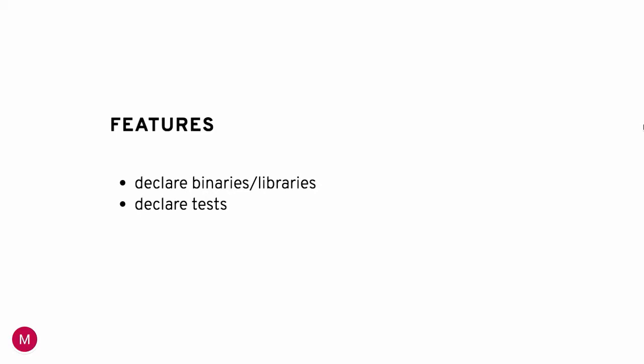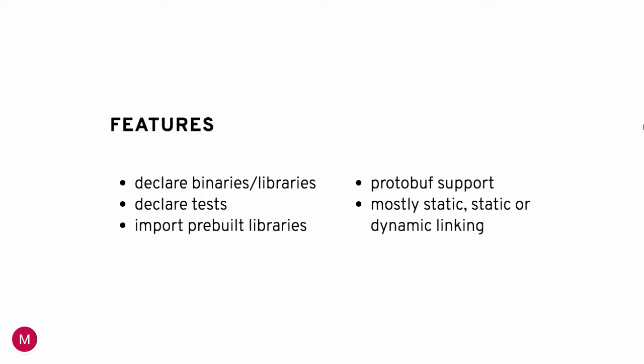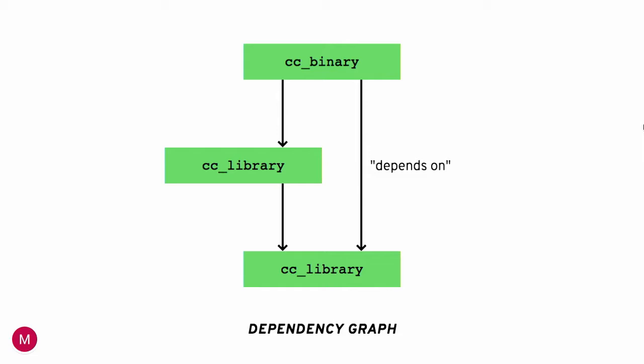Something I didn't fully cover but that's been tremendously useful is generating binding libraries for Haskell from protobuf descriptions. We also support mostly static linking — binaries and libraries are linked statically, with some still linked dynamically, similar to the default in the C++ rules. If you look at this feature set, it looks very much like the feature set for the C++ rules. In fact, we're pretty much in feature parity with the C++ rules, but for Haskell.